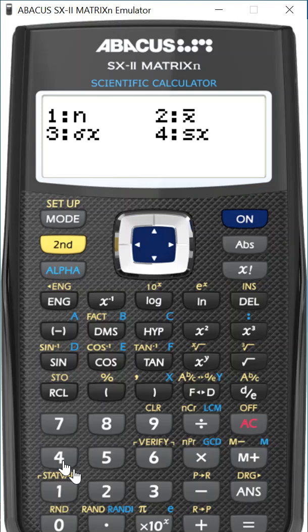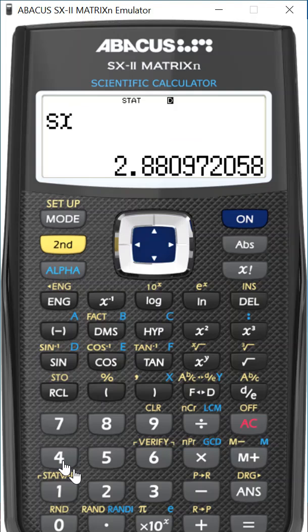So if we click three, we'll get the population. If we click four, we'll get the sample. So if you do that and press enter, you should get 2.88. And that's the sample standard deviation.